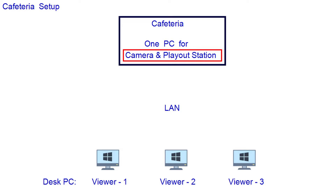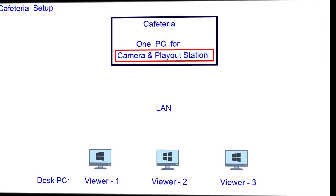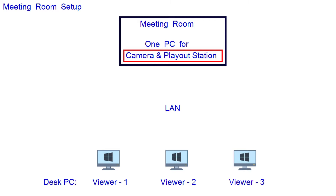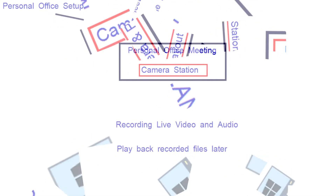One PC can be used for both the camera station and the play out station. In a setting like this, many people may open their viewer to visit the site for a short period of time, but the number of viewers at one time is limited, and the PC should be able to serve this limited number of viewers simultaneously. For a camera station in a meeting room, the purpose is for people who cannot attend the meeting to watch and hear it from their desk computer. The recorded video is also useful for attendees to review the meetings. The camera station can be a permanent setup in a designated conference room or a temporary setup using one of the attendees' laptop PCs.